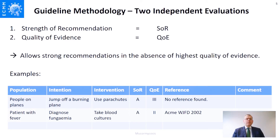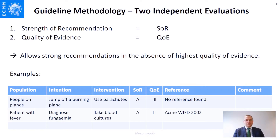There is a famous example: people on planes — if they jump off a plane they should use a parachute. For that population, intention to survive, and intervention of using a parachute, we would give a strong A recommendation. However, it has never been randomized, so it's not A1. If we don't find a reference we must state that, but references are listed in the sixth column of the table, and contributors or authors may add comments as needed.